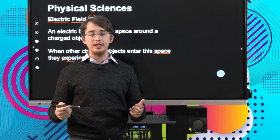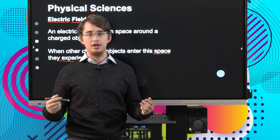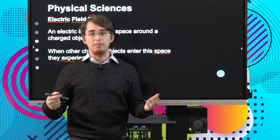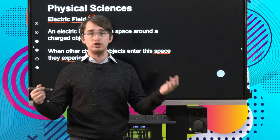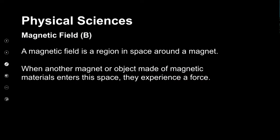Another type of common field we need to examine is magnetic fields — given the symbol B, sometimes affectionately referred to as B fields. A magnetic field is a region in space that forms around magnetic objects. When another magnet or object made of a magnetic material enters this field, it then experiences a force. The magnetic fields that you and I experience in our everyday lives tend to be much bigger and quite a bit stronger — usually when we think of magnetic fields we think of simple fridge magnets or even electromagnets used to pick up scrap cars in a junkyard.